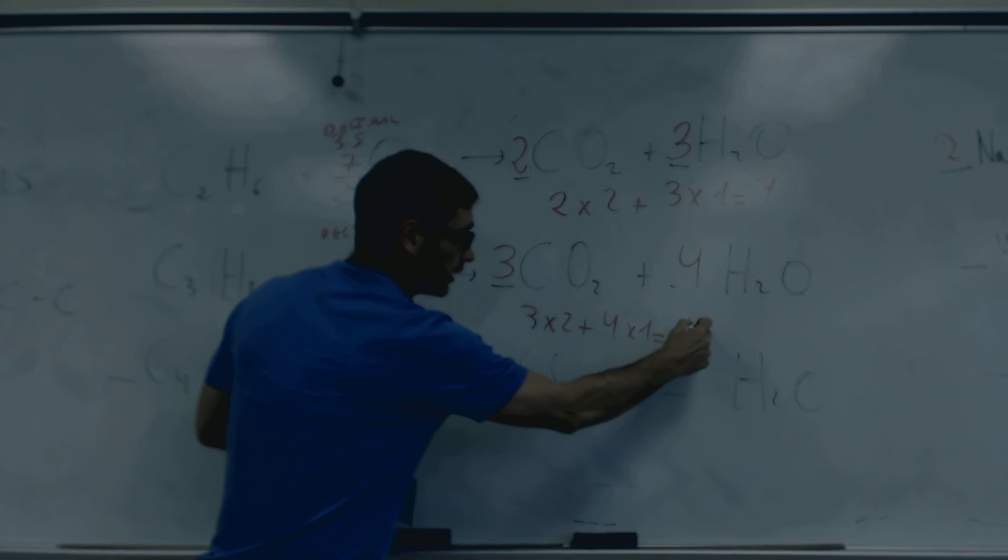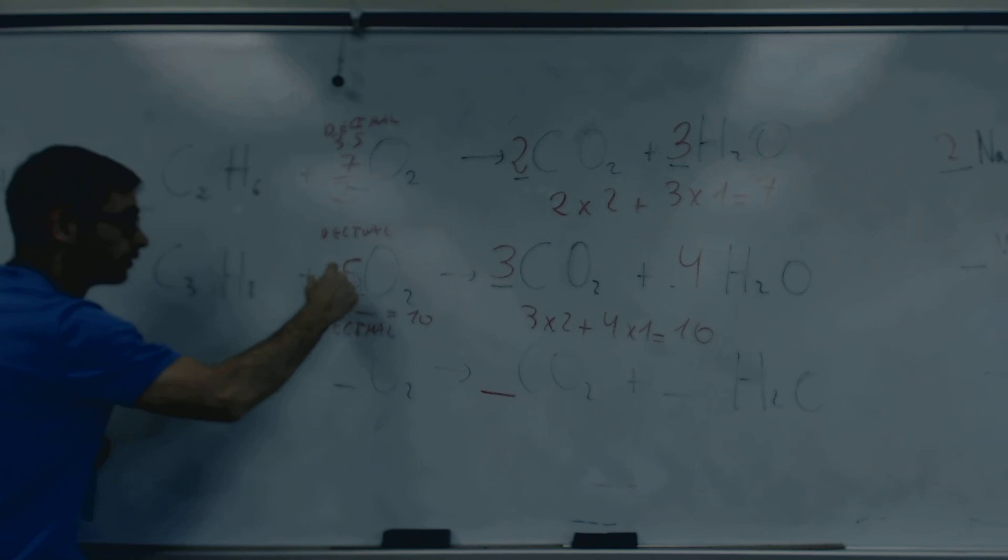And then the oxygens: three times two plus four times one is ten. So to get ten here, two times whatever must be ten. Five. Five. Okay?